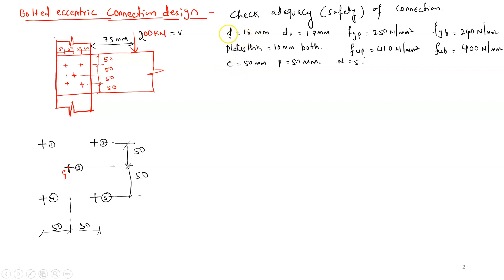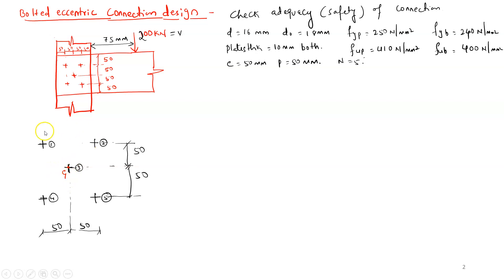The given data: bolt diameter is 16 mm, hole diameter is 16 + 2 = 18 mm as per code provisions. Yield strength of plate is 250 MPa, ultimate strength is 410 MPa. Yield strength of bolt is 240 MPa, ultimate strength of bolt is 400 MPa, and the number of bolts is 5. The same five bolts are rearranged symmetrically, so the CG of the group of bolts is at the center.